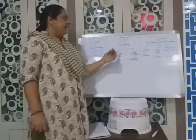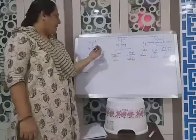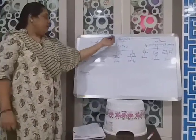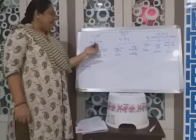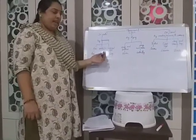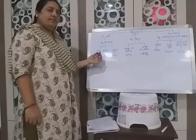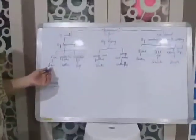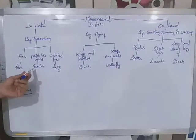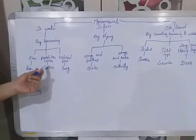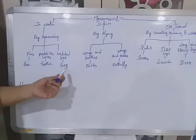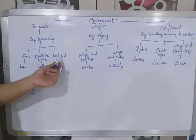Movement of animals is divided into three parts: in water, in air, and on land. In water — swimming — using fins, paddle-like limbs, and webbed feet. Fish swim through fins; turtles have paddle-like limbs; and frogs have webbed feet. Coming to movement in air — birds fly using wings.